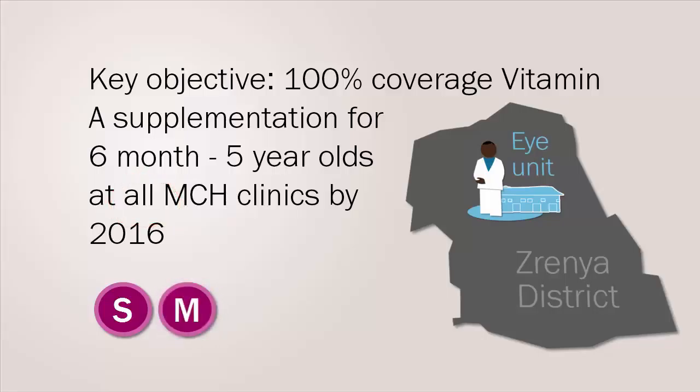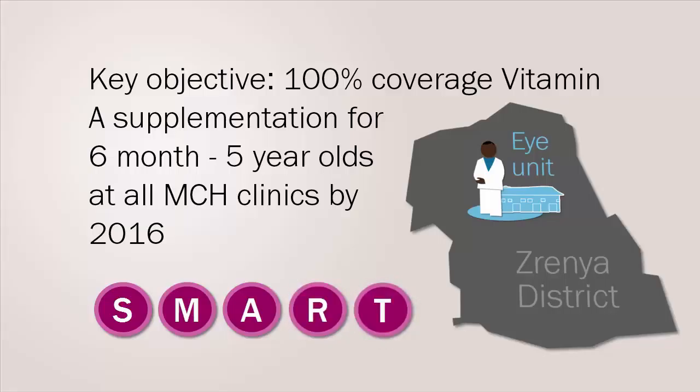It also has a clear target of covering 100% of maternal and child health clinics. It is measurable — an indicator can be used to measure how many clinics are carrying out the supplementation. The objective is also achievable with the budget and health staff available. We can see that the objective is very relevant for the project aim and it has a defined time frame of completion by 2016. So we can agree that this is a good objective.